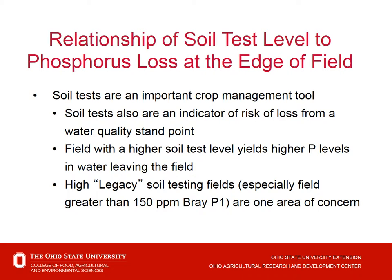So, the relationship between soil test phosphorus and loss of phosphorus from the edge of the field. We have these edge-of-field trials that were studies put in place, and we're already starting to see results on where we might be losing some phosphorus. A soil test can be an indicator of the risk of phosphorus loss from a water quality standpoint. We have learned that fields with high soil test phosphorus have increased levels of phosphorus leaving the field — particularly those legacy soil test fields, such as manured fields or livestock operations, where we have 150 parts per million Bray P1 or higher.